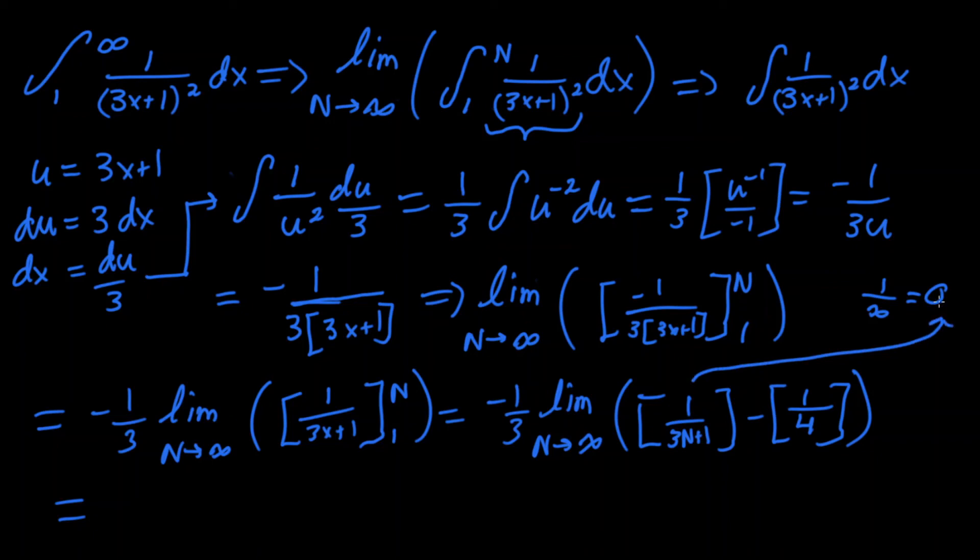We can write negative 1 third, and we don't need the limit anymore since that was the only n in the equation. If you took the limit of n as approaches infinity of 1 over 4, it's still 1 over 4 since there's no n term. So essentially, we can just simply multiply that by 0, since this term is 0, minus 1 fourth.